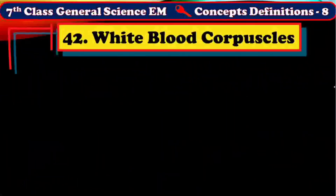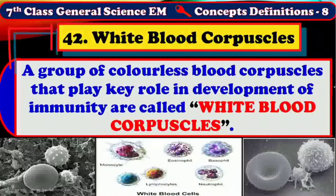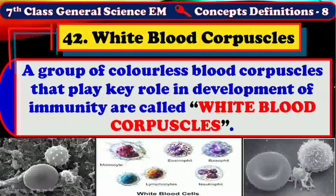A group of colorless blood corpuscles that play a key role in the development of immunity are called white blood corpuscles, or WBC. White blood corpuscles are also called leukocytes. They are colorless and shapeless cells, the fewest among all blood corpuscles, but the largest of all blood corpuscles. Granulocytes and agranulocytes are the two major types of leukocytes.